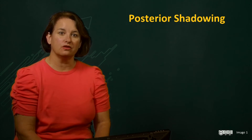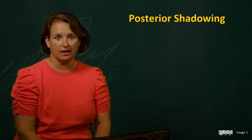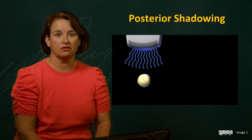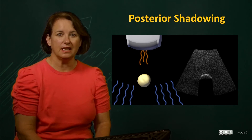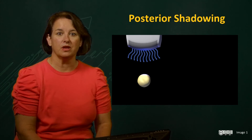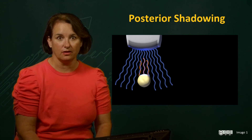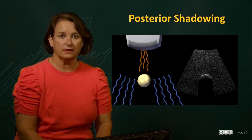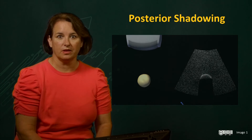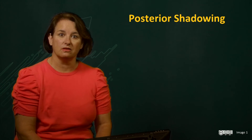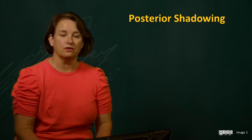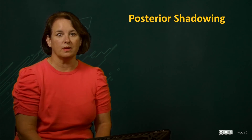Conversely, very strong reflectors do not permit the transmission of sound, as the signals simply bounce straight back to the transducer. This results in a very bright leading edge of the structure and no signal is seen beyond it — it's very, very dark. This phenomenon is known as posterior shadowing. Examples of strong reflectors seen in clinical ultrasound include bones, gallstones, kidney stones, and gas. We look for this posterior shadowing in an effort to determine the nature of the tissue that we're looking at.